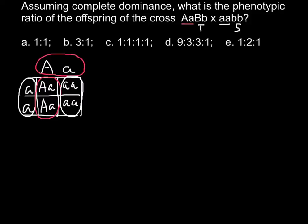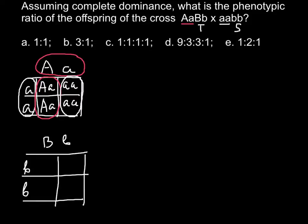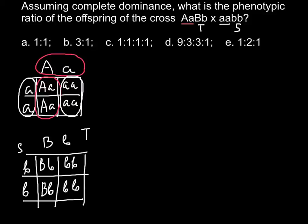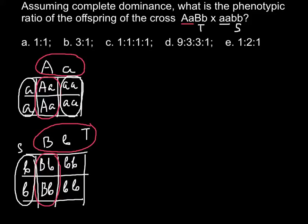Once again when we build a Punnett square, we have capital B small b on top and small b small b on the side. The parent on top is going to be tall and the parent on the side is going to be small. So the progeny genotypes are: capital B small b, small b small b, capital B small b, and small b small b. So 50% of the progeny are going to be tall plants and 50% are going to be small plants.